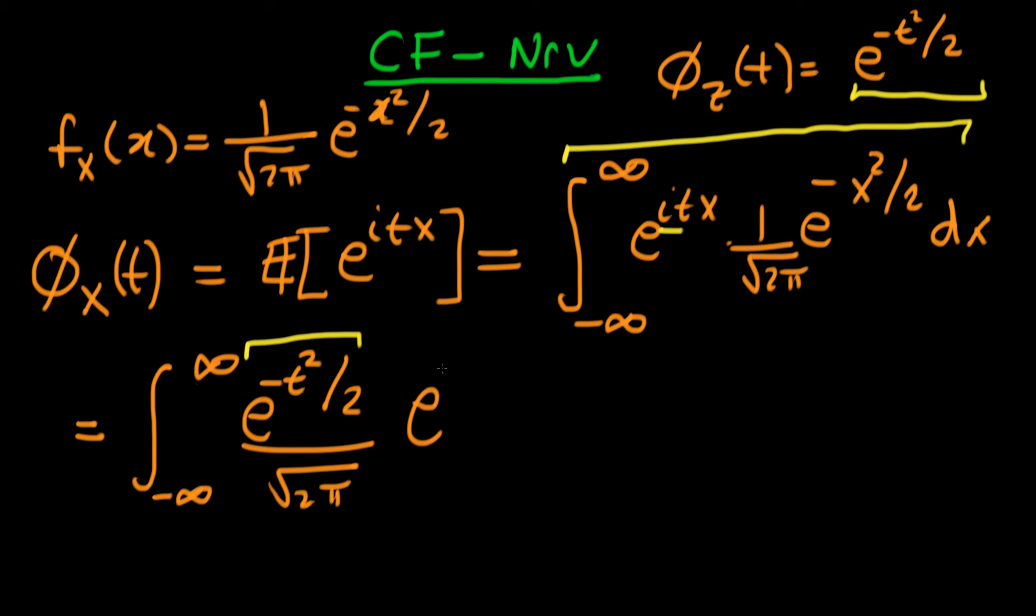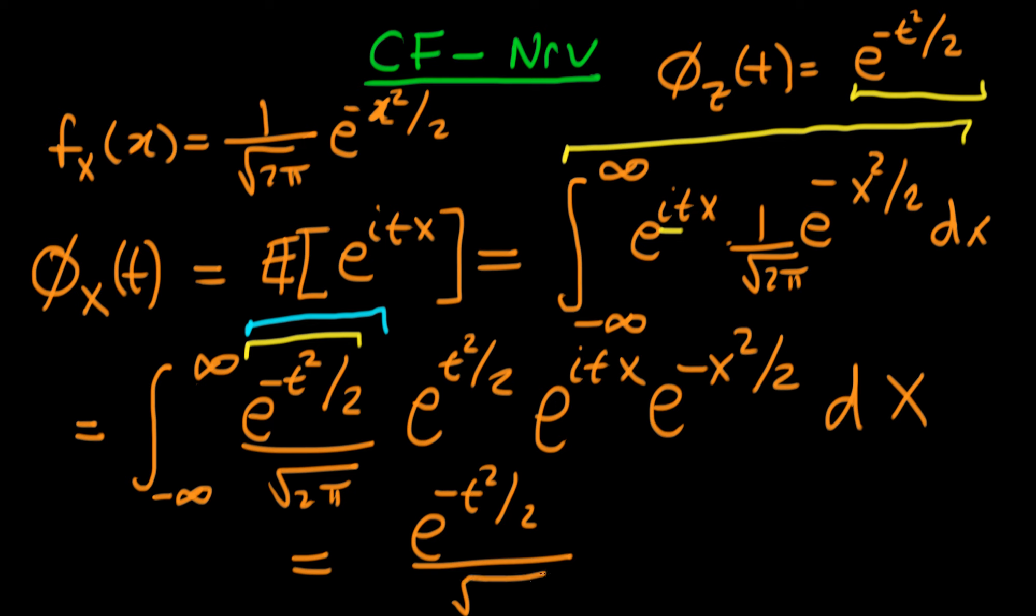The third part is what we had originally: e to the i t x times e to the minus x squared over 2, integrated across x. Because we've got parts that don't involve x, we can take them out of the integral, leaving us on the outside with e to the minus t squared over 2 divided by root 2 pi.